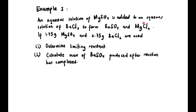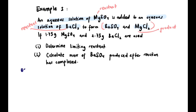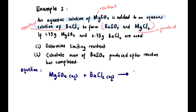Let's try another example. An aqueous solution of MgSO₄ is added to an aqueous solution of BaCl₂ to form BaSO₄ and MgCl₂. If 1.75 grams of MgSO₄ and 2.75 grams of BaCl₂ are used, determine the limiting reactant and calculate the mass of BaSO₄ produced. The balanced equation is: MgSO₄(aq) + BaCl₂(aq) → BaSO₄(s) + MgCl₂(aq). Checking the balance: 1 Mg, 1 S, 4 O, 1 Ba — the equation is already balanced.